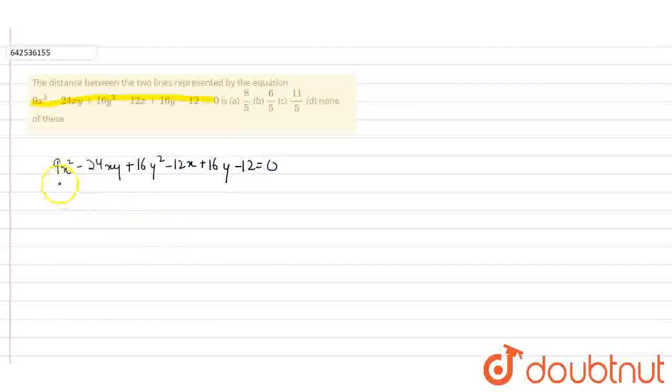So let's consider these three terms first. We can write it as 3x whole square minus 2 into 3x into 4y plus 4y whole square. So this can be written as 3x minus 4y whole square.